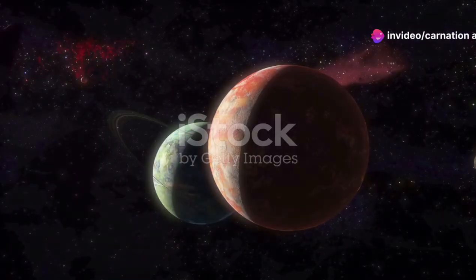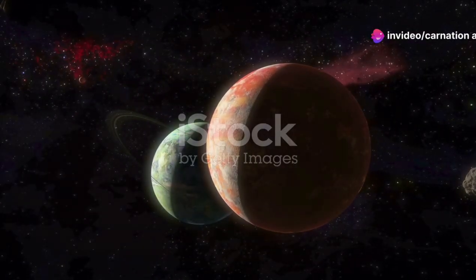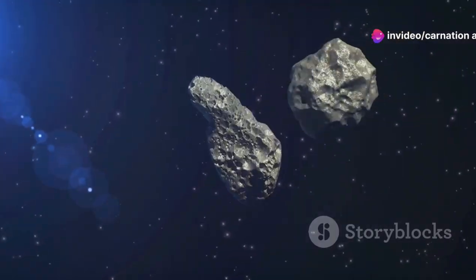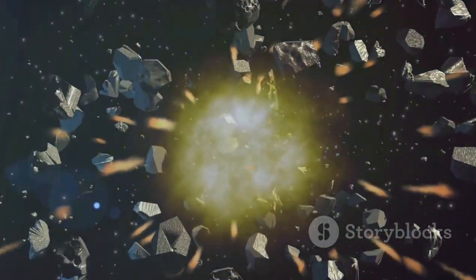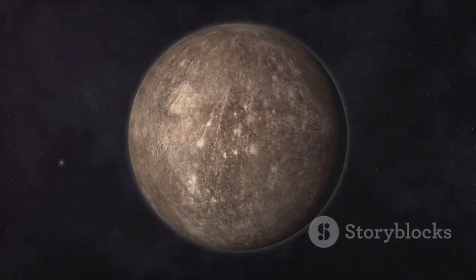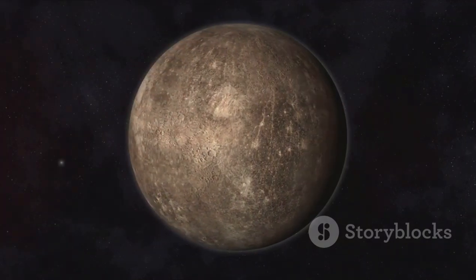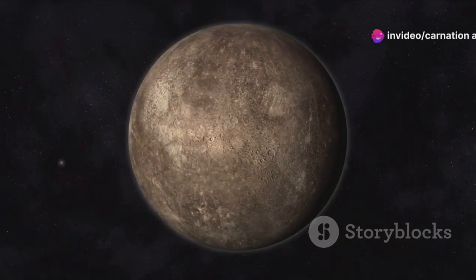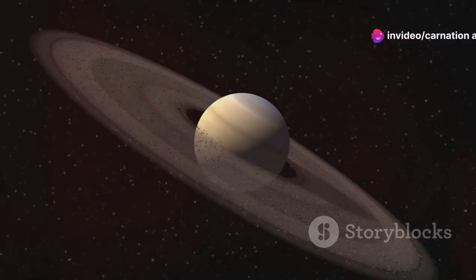These small bodies, called planetesimals, served as the building blocks of planets. As they collided and merged, they formed even larger bodies known as protoplanets. Closer to the sun, where temperatures were high, rocky planets like Mercury, Venus, Earth, and Mars began to take shape.